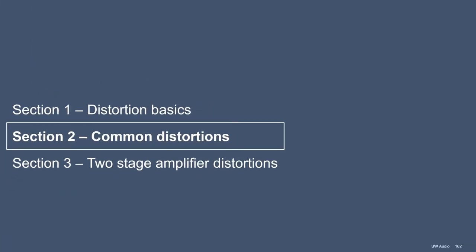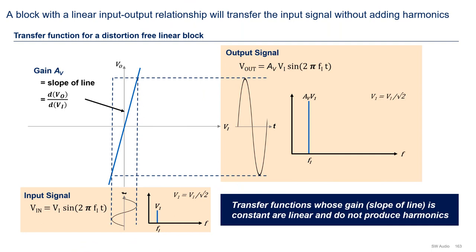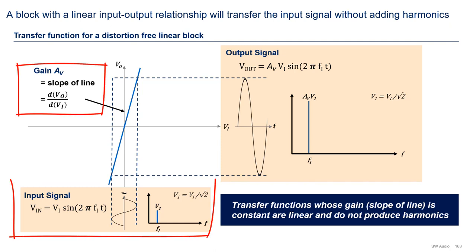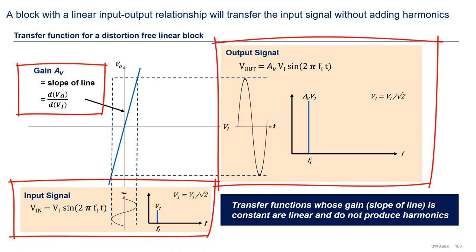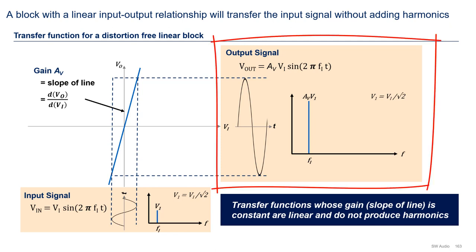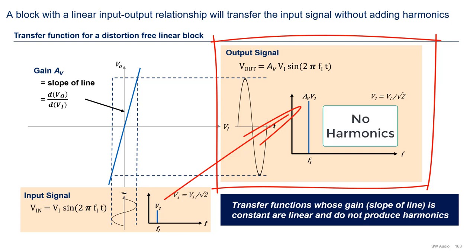Let's now look at some common distortion mechanisms. To understand distortion-generating amplifier nonlinearities, let's first understand the gain plot of a circuit block. A gain plot shows the relationship between the input and the output signals of a block. The block's gain is the slope of the line, with the input signal on the x-axis and the corresponding output on the y-axis. For a perfectly linear block, the gain needs to be constant — the line needs to be straight — such that every point on the input signal is amplified by the same amount. As a result, the output is an amplified version of the input with no harmonics; it is distortion-free.